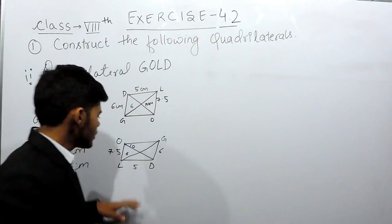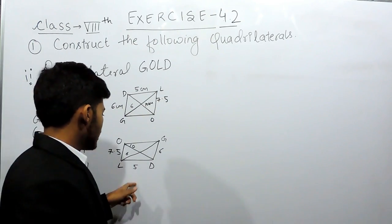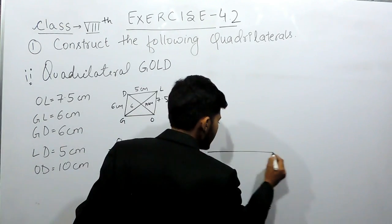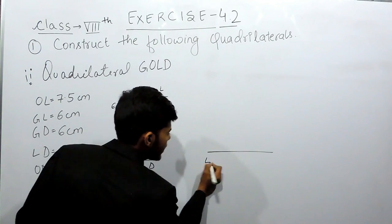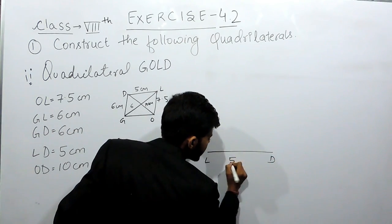First of all, you need a ruler, a compass, and a pencil. Now we will draw the line segment LD, which is 5 cm.